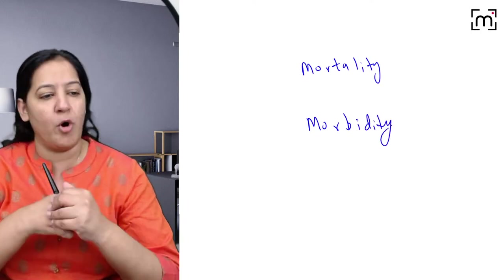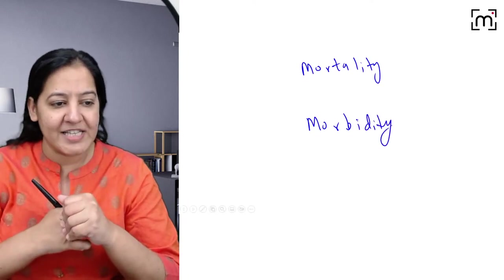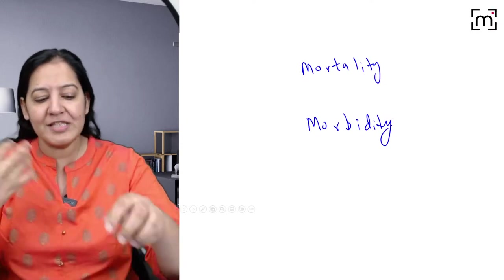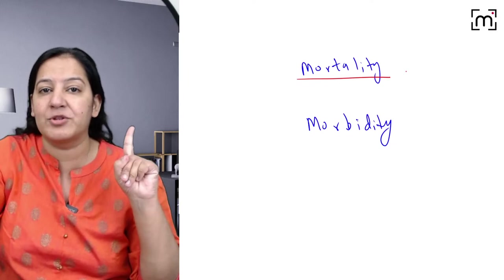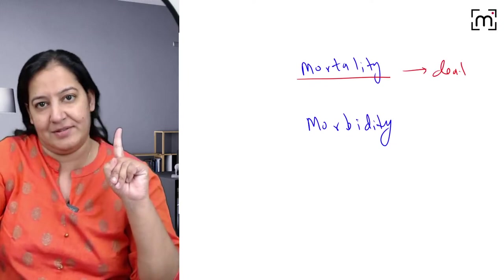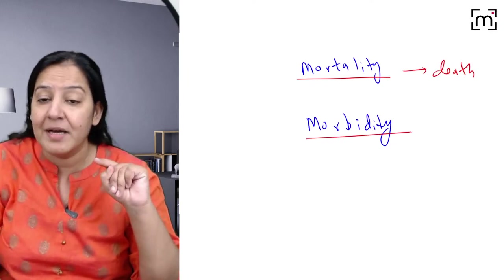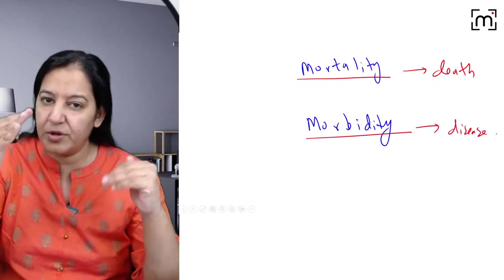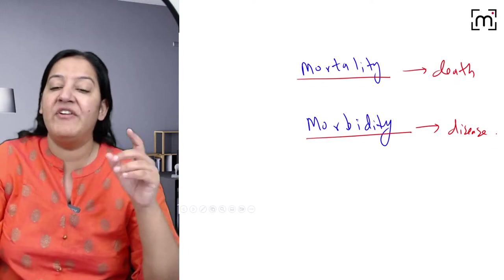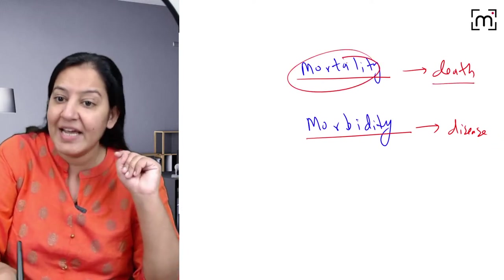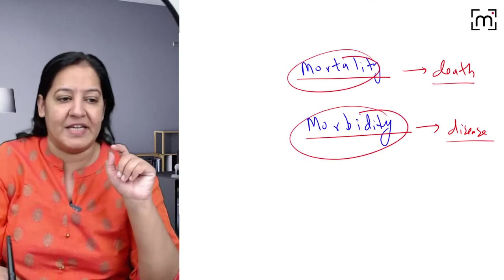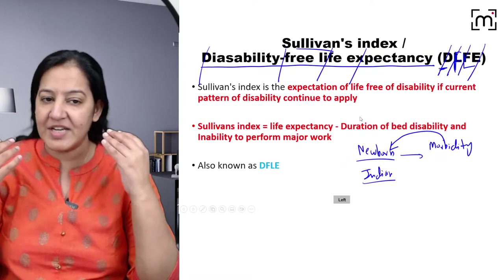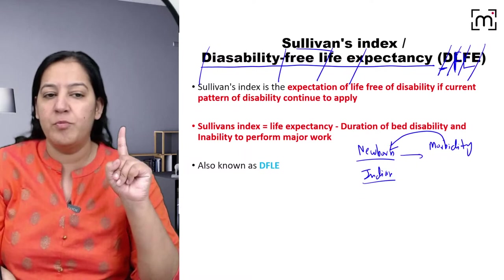Mortality means death, and morbidity means disease. In PSM, we call death as mortality and disease as morbidity. These are two different terms. So, if any newborn is born today in India, all countries have their own life expectancy depending on the health services provided in that country.